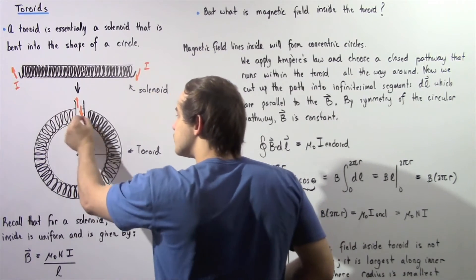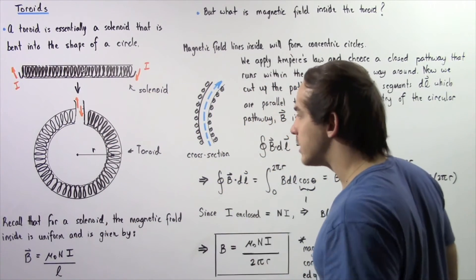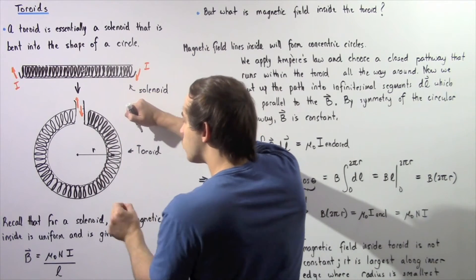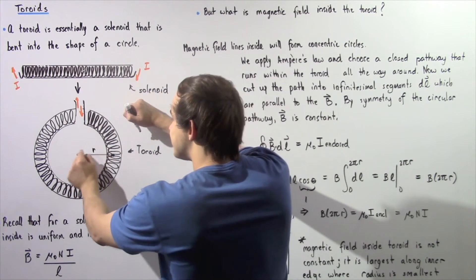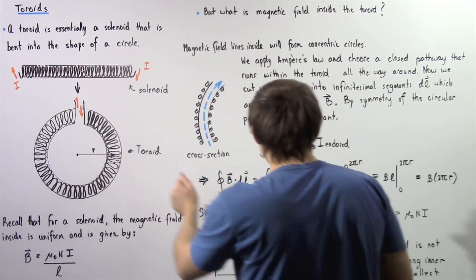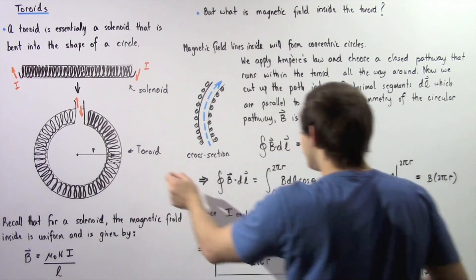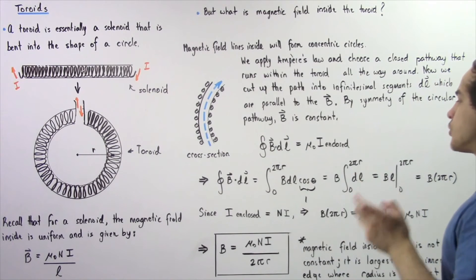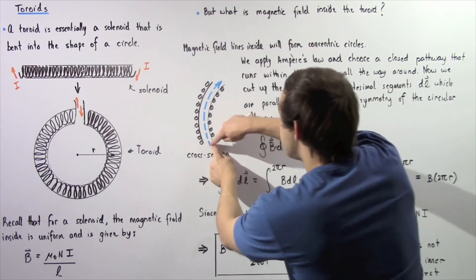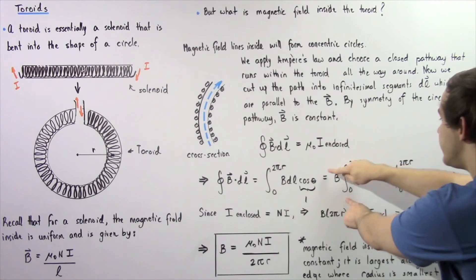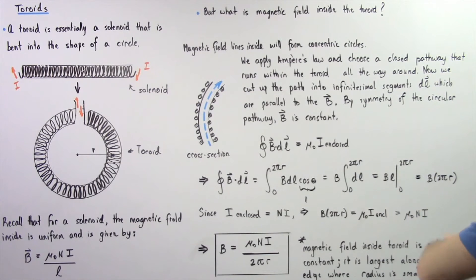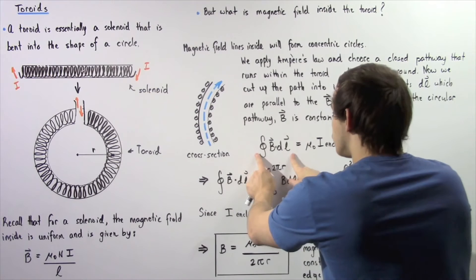The total distance around the pathway is the circumference of the toroid. If the radius from the point where we are examining the magnetic field to the center of the toroid is r, then the beginning point is 0 and the final point is 2πr, which is the circumference of the toroid in this region. Bringing B out as a constant and evaluating the integral from 0 to 2πr, the left side of Ampere's Law equals B multiplied by 2πr.